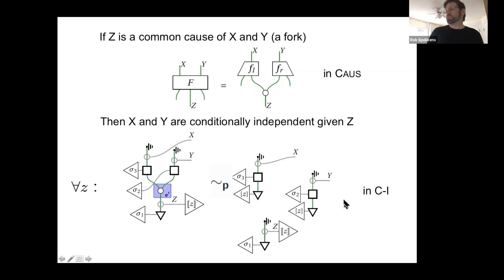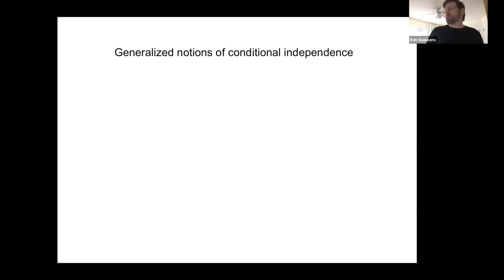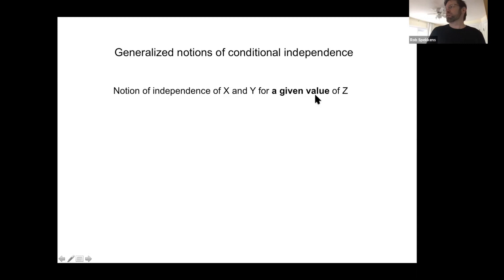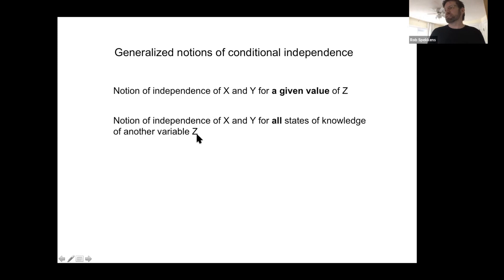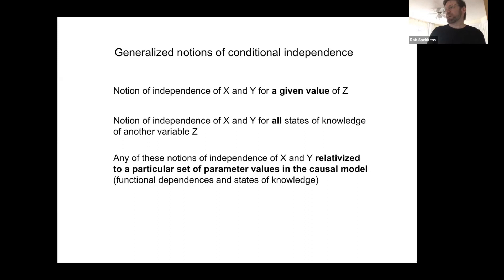In addition to standard d-separation results, the framework allows defining new notions of conditional independence: independence for a particular value of Z rather than all values, independence regardless of what you know about Z (not just conditioning or marginalizing), and independence relativized to particular sets of parameters such as specific states of knowledge about functions or root variables.